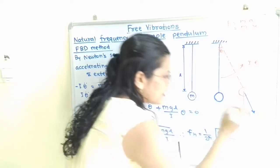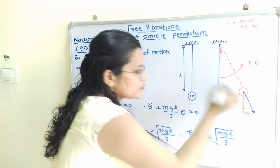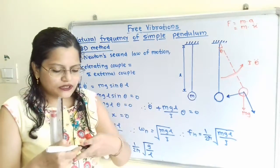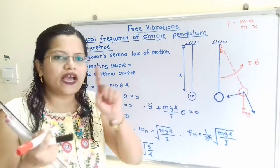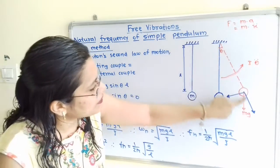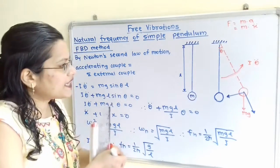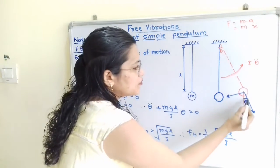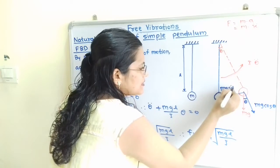We draw one component along the extended string and draw a perpendicular line to that component through the center of the bob for the other component. Observing the geometry, this string has the same inclination as the vertical, and by the red marker line, the angle is also theta. Therefore, the component along the string is MG cos theta, and the perpendicular component is MG sin theta.